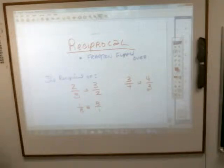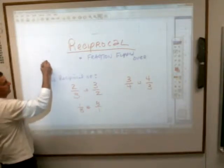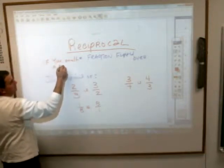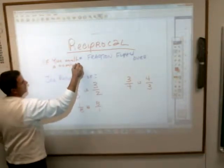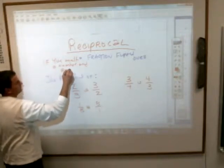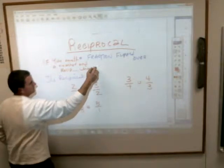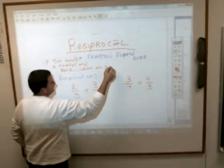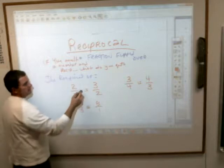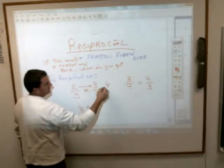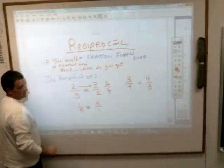Now, here is a thought thing here. If you multiply a number and its reciprocal together, what do you get? Let's look at this. If I multiply these numbers together, two times three is six, and three times two is six.